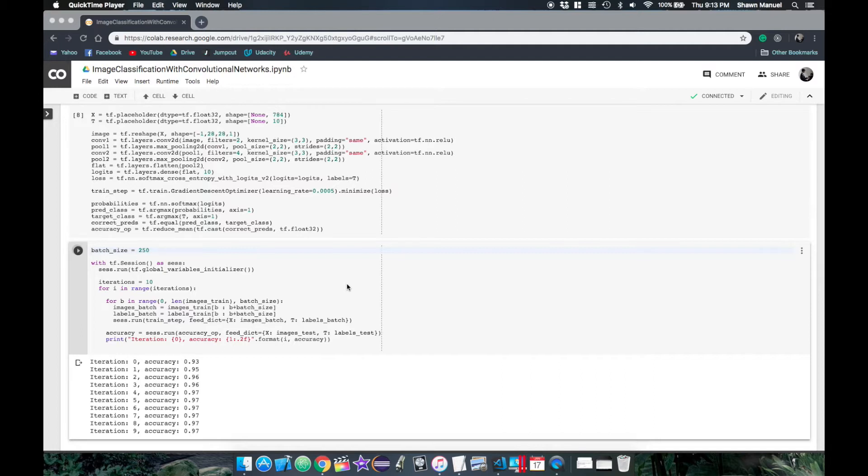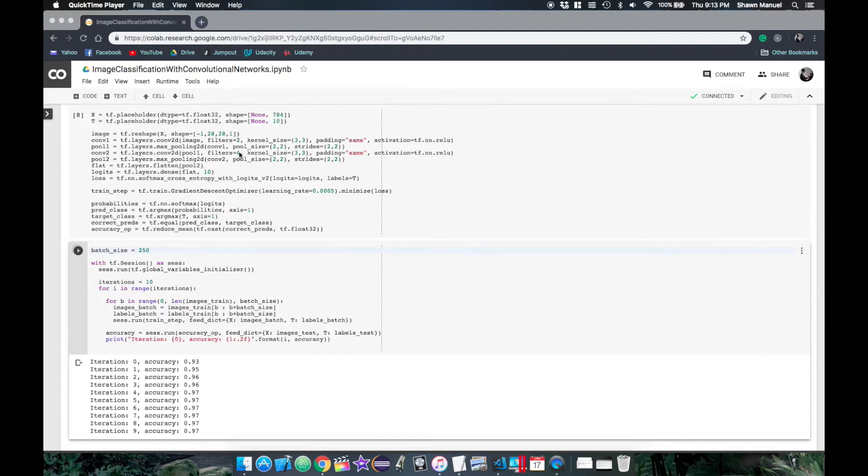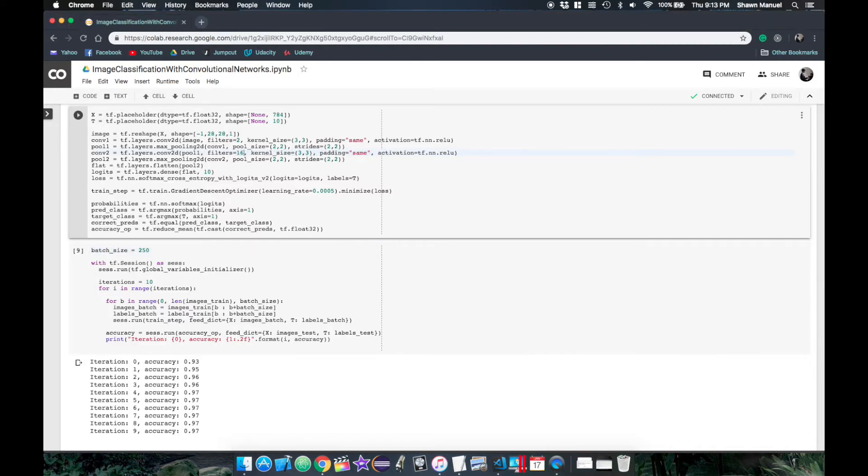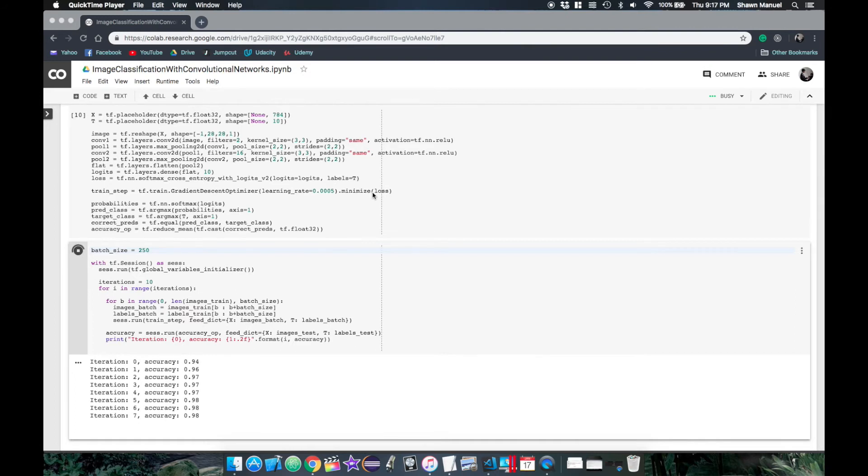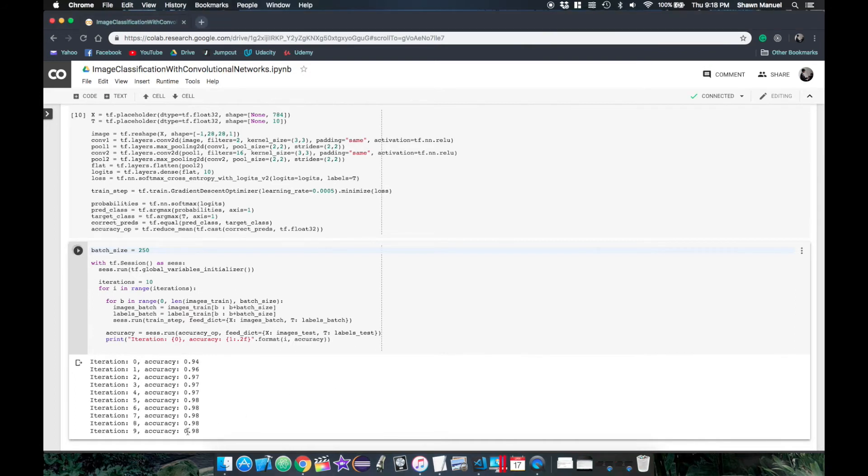But often when reducing the height and width of the output using max pooling, it's a good idea to offset this reduction in outputs by increasing the number of filters so that more high level features can be accounted for. So let's try squaring the number of filters in the second layer to have 16 filters. So now when we run this we were able to get the same accuracy as before we used max pooling, but this time our overall efficiency has improved.